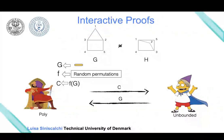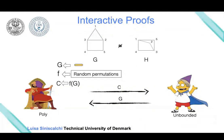Now the prover, since he can run in exponential time—and in this case quasi-polynomial time—can apply the algorithm to find the permutation between C and G. And this is actually the protocol.